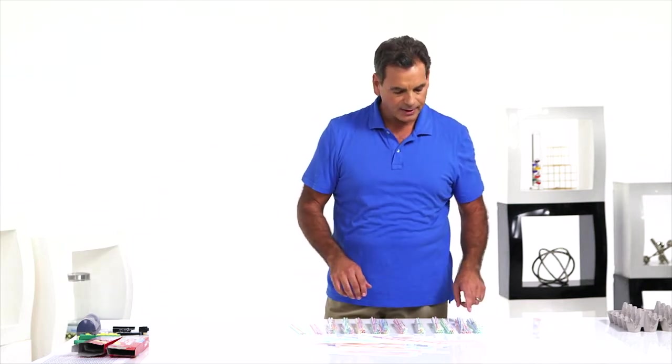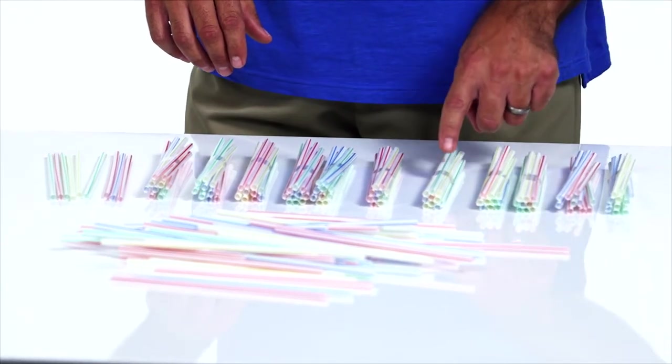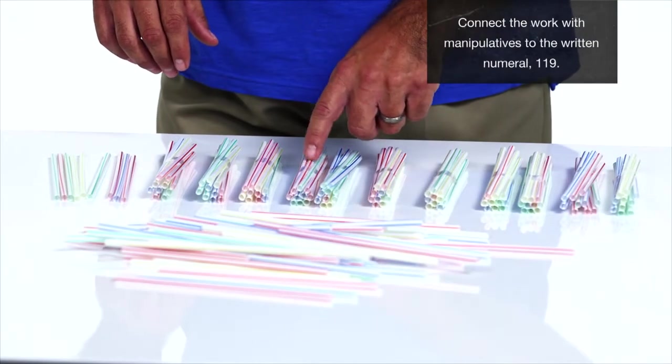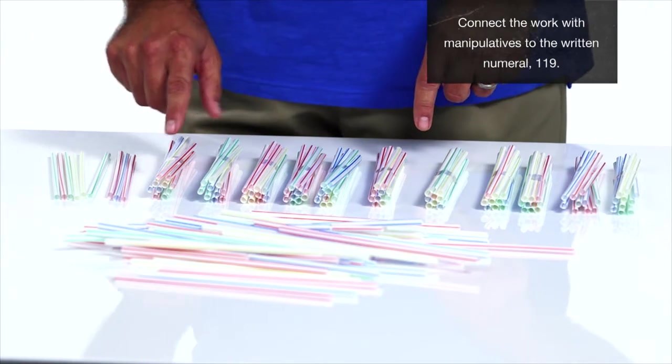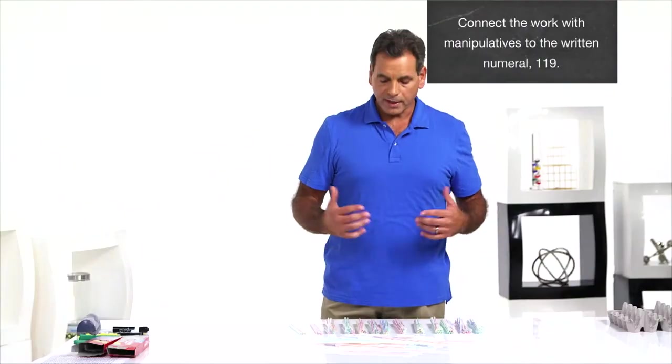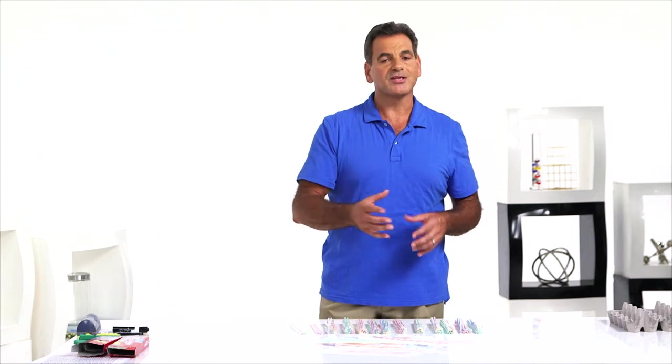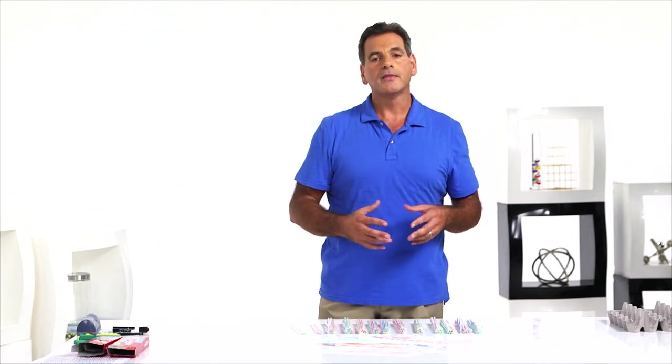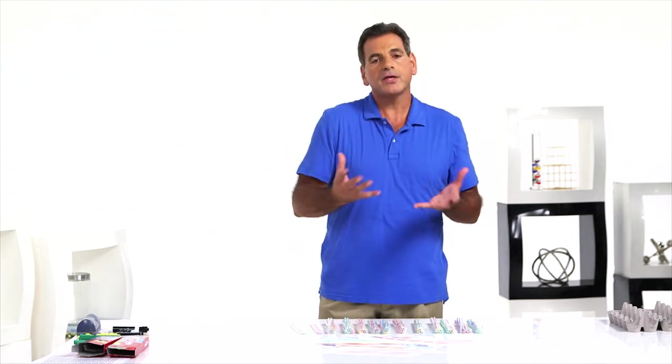Let's count these again. 10, 20, 30, 40, 50, 60, 70, 80, 90, 100, 110. What can I do with those 10s? If a student doesn't say, and it's most likely that one of them will, you can put 10 tens together, then you say it. I can take 10 tens, put them together, and make 100.